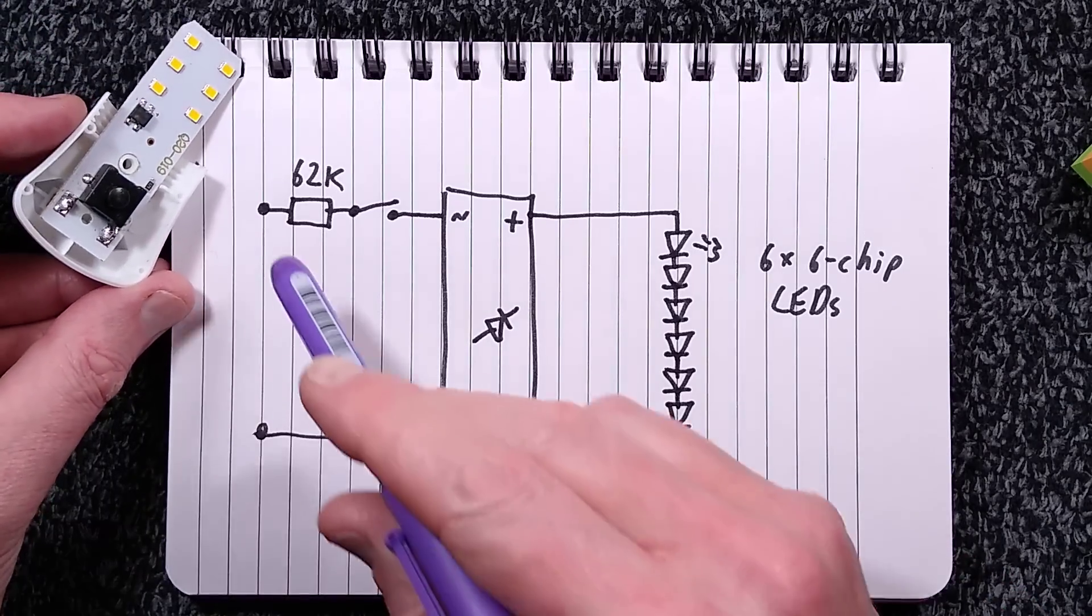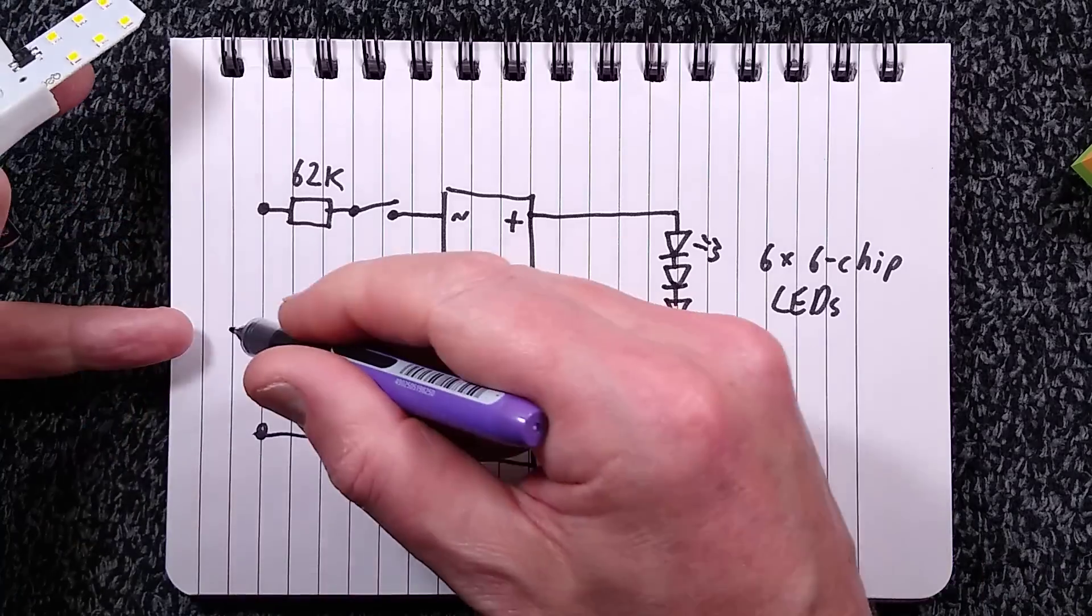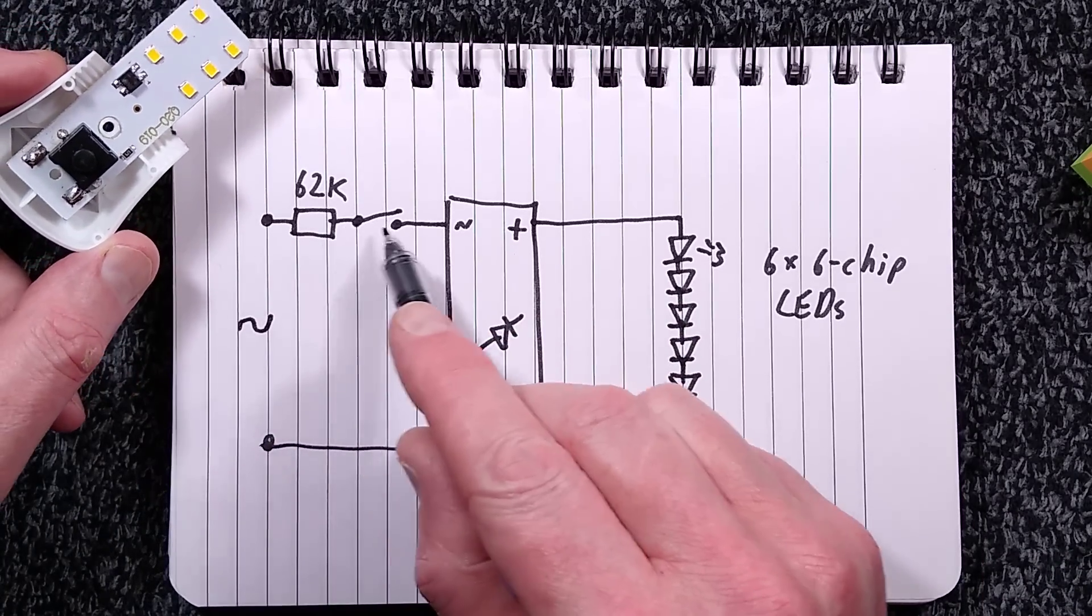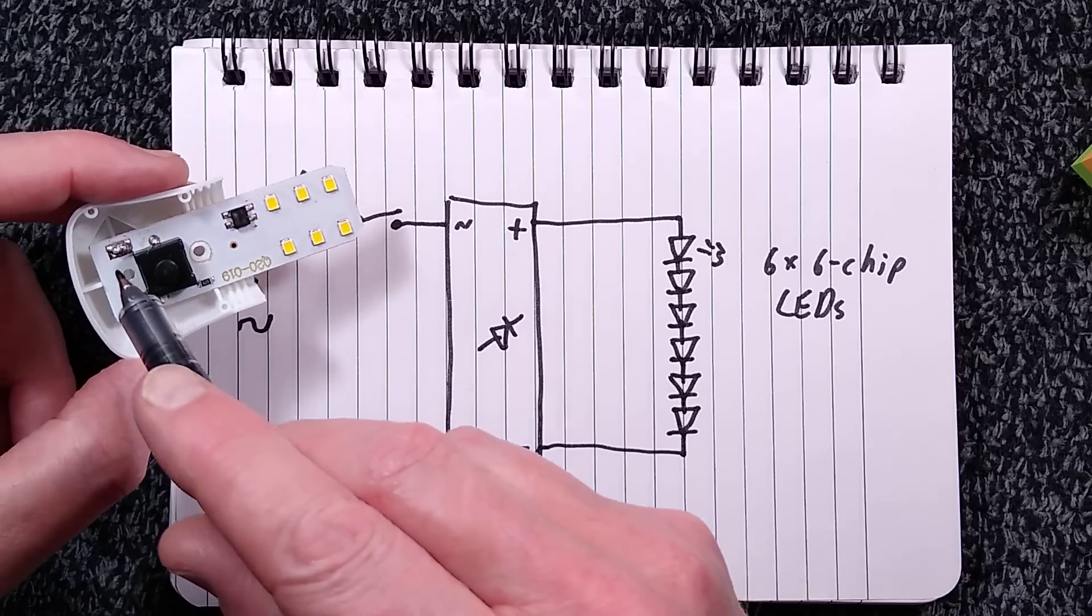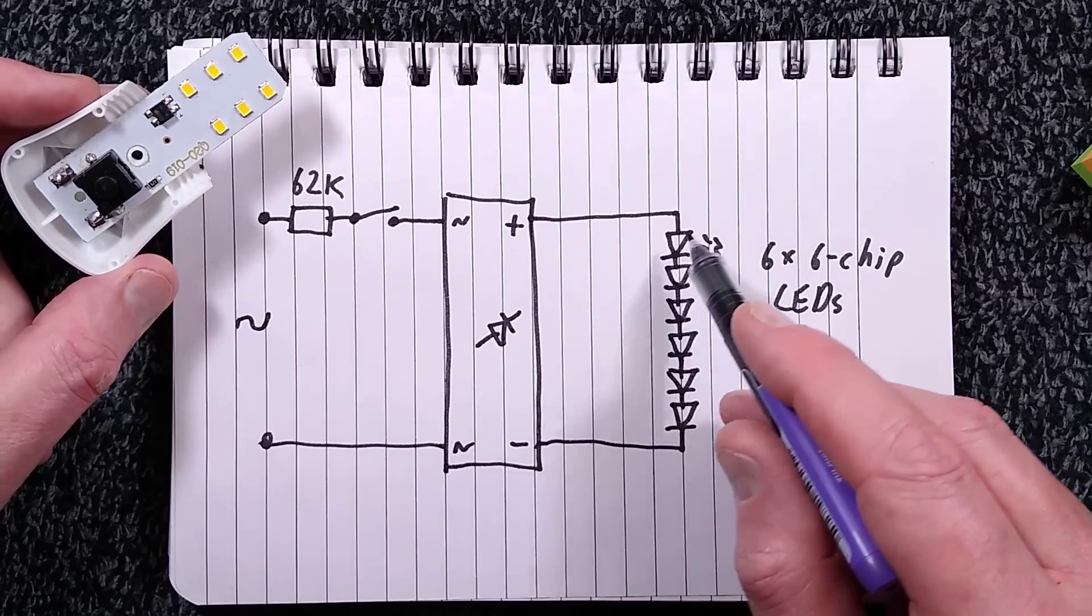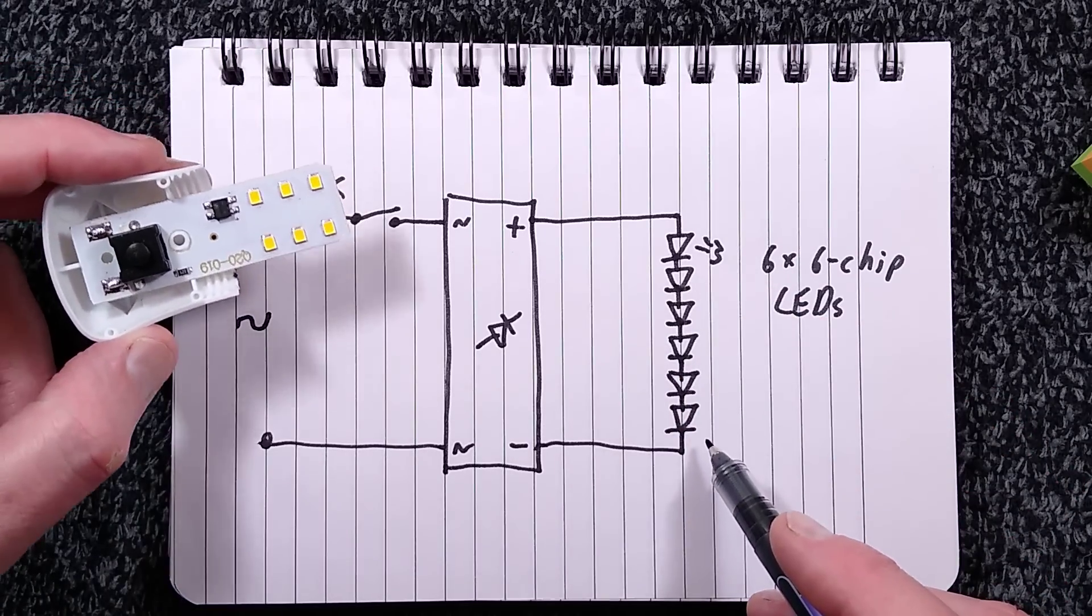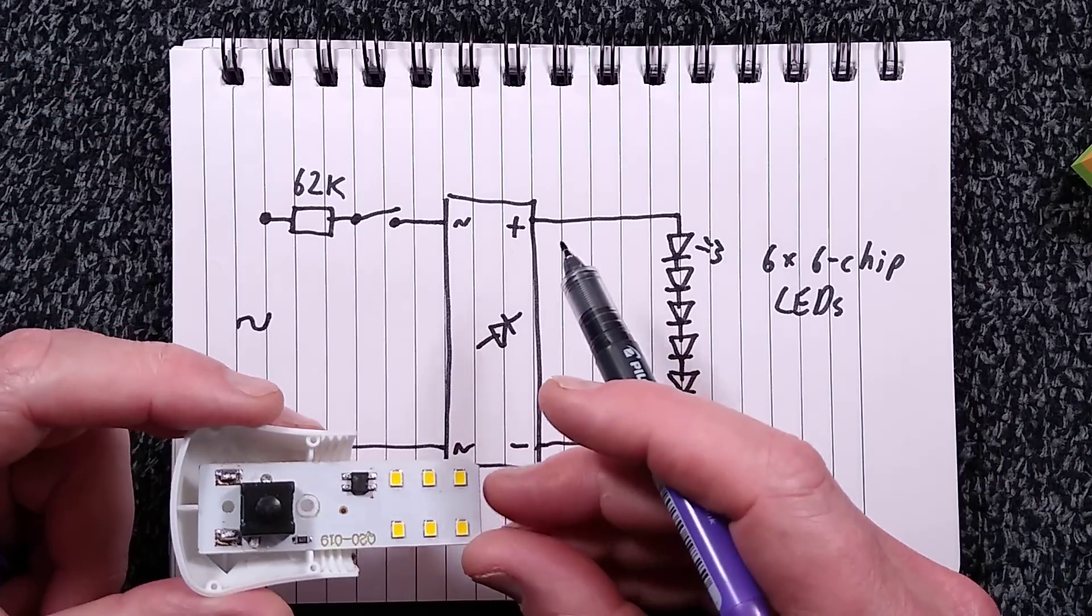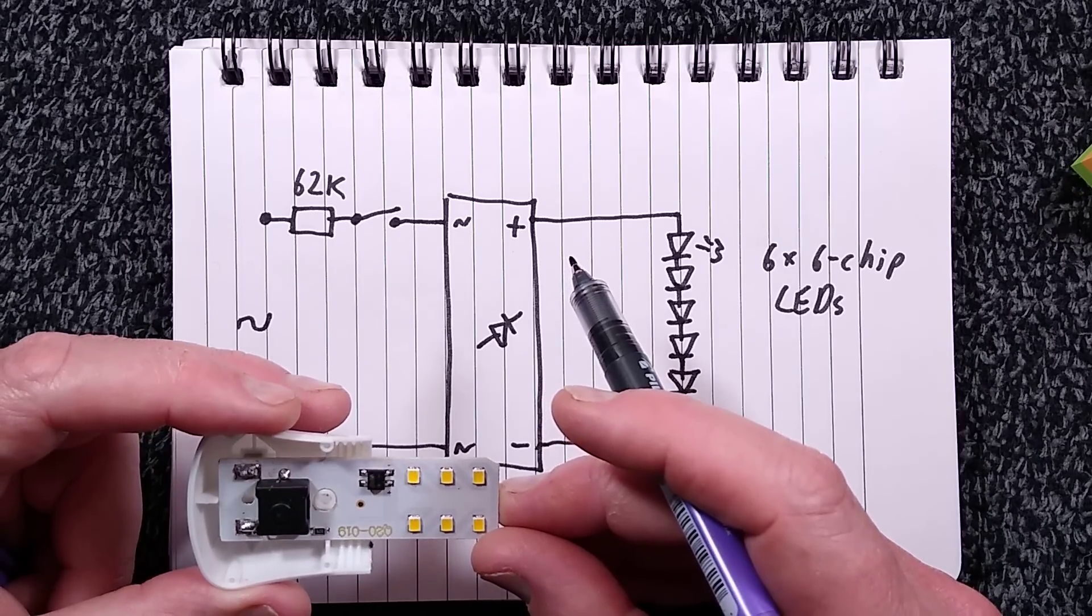And here is the schematic. The incoming AC supply goes to the resistor first, which is surprising. Then it goes to the switch and the other leg goes straight to the bridge rectifier, and then it's just six LEDs in series configured as six chips per LED. Very simple.